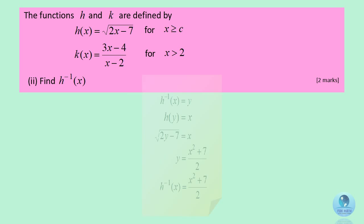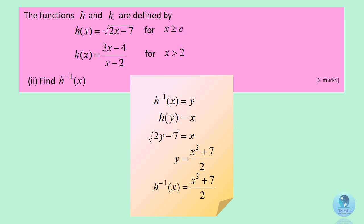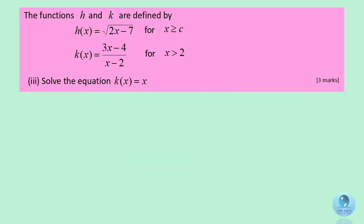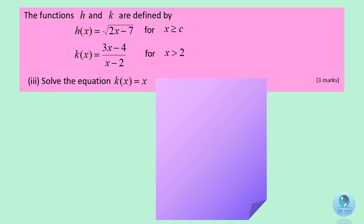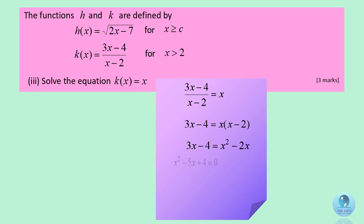This is how you get the inverse function of h. For the equation k(x) equals x, you will get the quadratic equation x squared minus 5x plus 4 equals 0. Factorize the equation and take only x equals 4, remembering that the domain for k(x) is greater than 2.